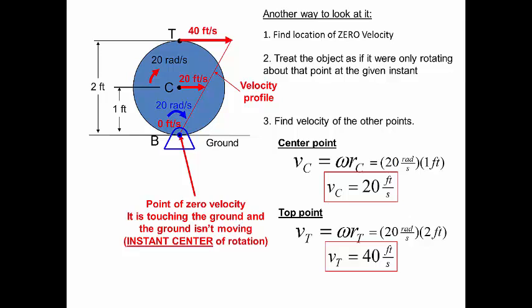Using this velocity profile, we can find the velocity on the wheel at any point from where it touches the ground up to the top. For example, at a point half a foot off the ground, the velocity would be 10 feet per second, and at 1.5 feet from the contact point, the velocity would be 30 feet per second.